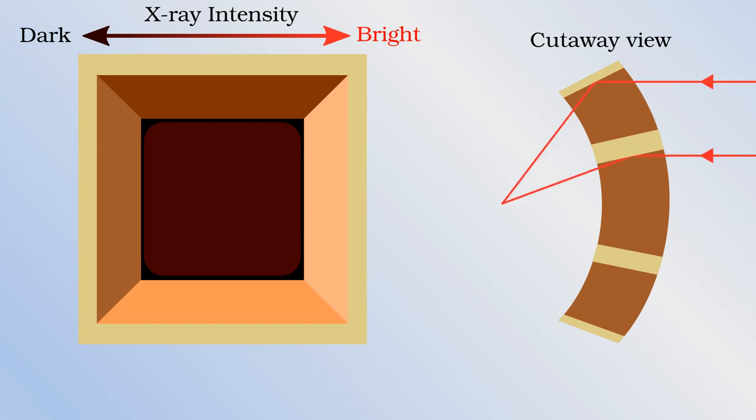Some rays graze the upper face of the microchannel and are reflected downwards to the detector. Similarly, some graze the bottom face and are reflected upwards. Rays from both these mirrors converge at the same height on the detector, but because they haven't been focused at all in the side-to-side direction, they are spread out horizontally. These types of rays therefore show up on the detector as a horizontal bar of moderate intensity.